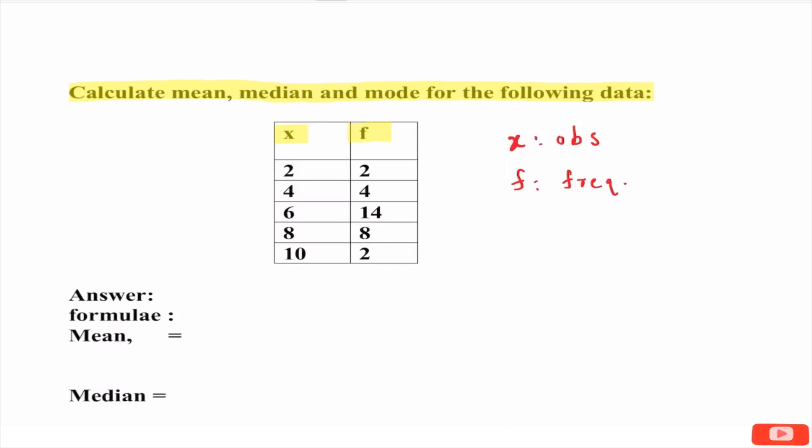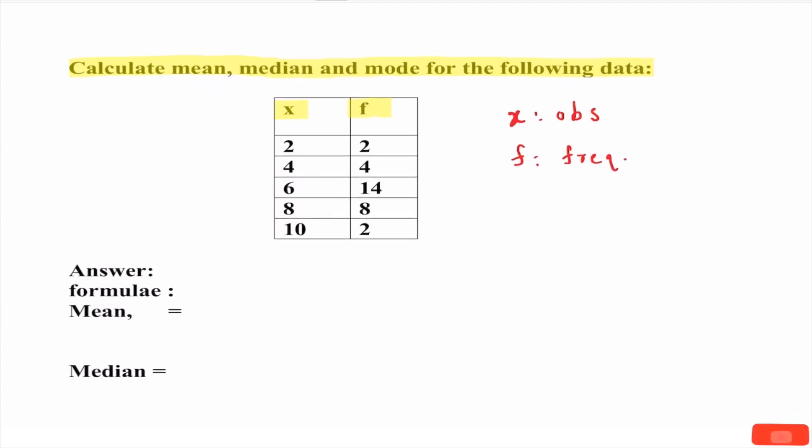Second type of frequency distribution may be in the first column classes are given and in the second column we are given frequencies. That kind of frequency distribution is called as continuous frequency distribution. As we are given here discrete frequency distribution.